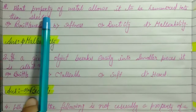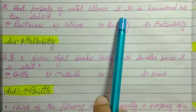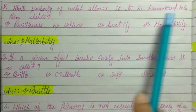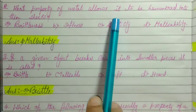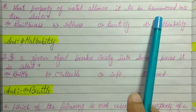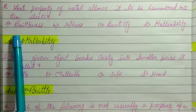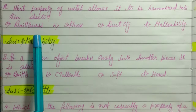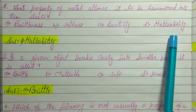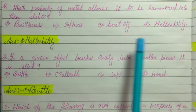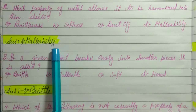Second question: What property of metal allows it to be hammered into thin sheets? The options are brittleness, softness, ductility, and malleability. The answer will be malleability.